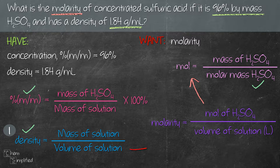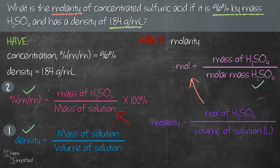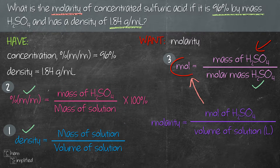We'll start with the density formula. Assuming a volume gives us the mass of the solution. Then we plug that into the percent by mass formula to get the mass of H₂SO₄. Using the mass of H₂SO₄, we plug it into the mole formula to get the number of moles. Then we plug that into the molarity formula to find the molarity, which is what the question wants.